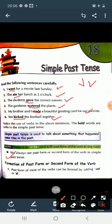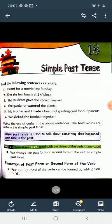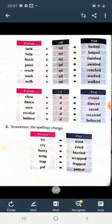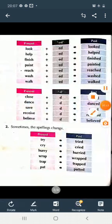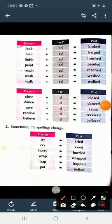First, past form of most of the verbs can be formed by adding ED and D. Mostly हम past form को ED या D लगा कर बनाते हैं. जैसे Look, looked. Right? Help, plus ED, helped. Finish, plus ED, finished.